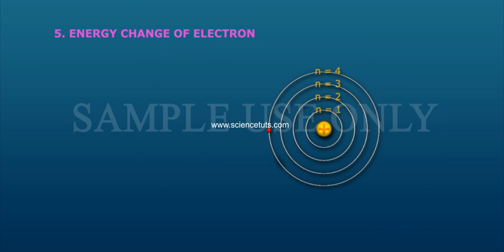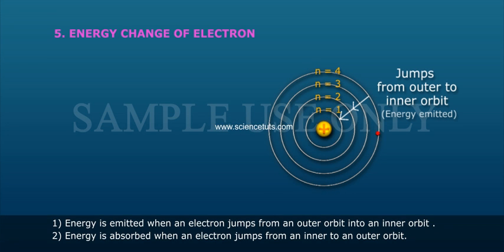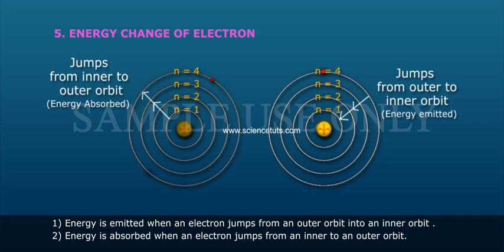Energy change of electron: Energy is emitted when an electron jumps from an outer orbit into an inner orbit. Energy is absorbed when an electron jumps from an inner orbit to an outer orbit.